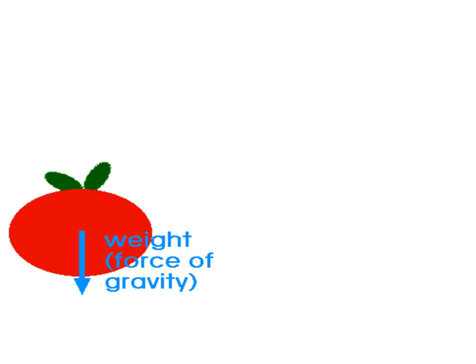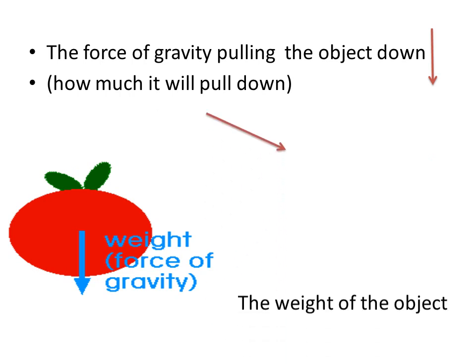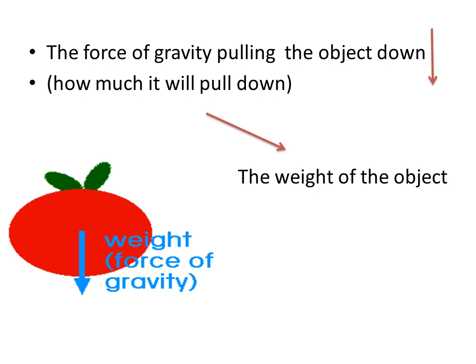The force of gravity pulls objects down, and this is called the weight of the object. Its direction is always downward. The weight tells us how much an object is pulled down — how heavy or light the object is. This is the force of gravity, or the weight of the object.